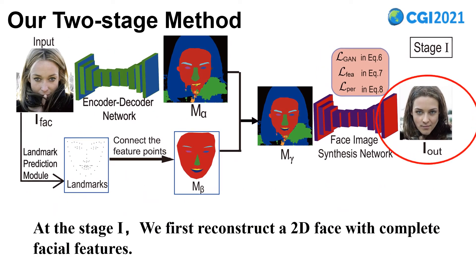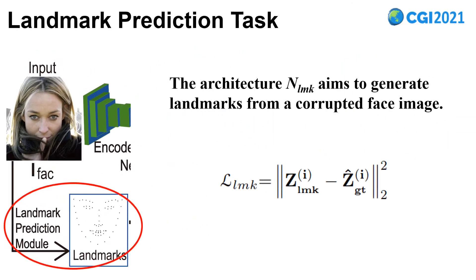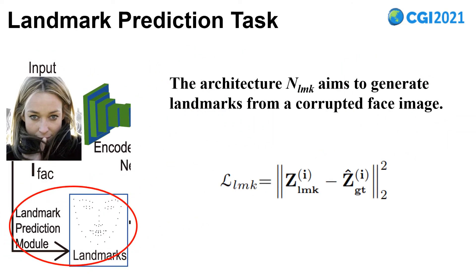So our goal is to reconstruct the face with occluded things. We designed a two-stage method for 3D face reconstruction. At stage 1, we reconstruct a 2D face with complete face features at first. In the function of landmark prediction, the architecture aims to generate landmarks from an original face image, obtaining 6 to 8 feature points.